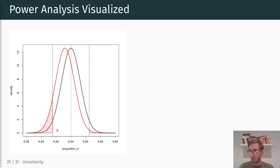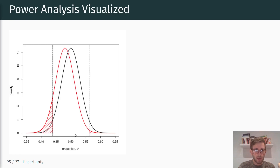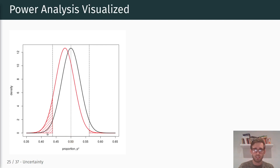In this particular case the power is actually rather low for this mu star, because a large portion of the probability mass of the red curve still falls between the two vertical bars, meaning we would fail to reject the null hypothesis even though it is false. The true population parameter is mu star = 0.47, not 0.5, yet given the sample size and this assumed mu star we would in many cases still fail to reject the null hypothesis that p equals 0.5.